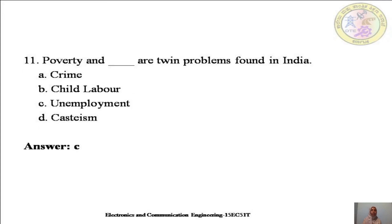The next question: Poverty and _____ are twin problems found in India. The options are A. crime, B. child labour, C. unemployment, or D. casteism. In India, poverty and unemployment are both twin problems which Indians are facing, so the right answer is C — unemployment.